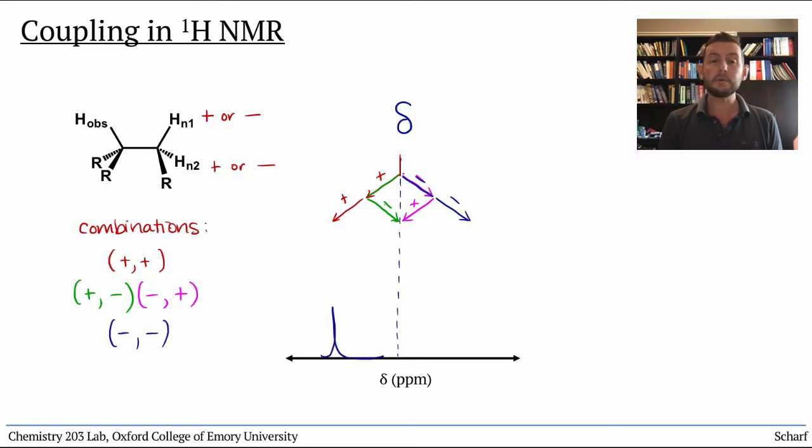We end up with a set of three peaks in a one to two to one ratio called a triplet.